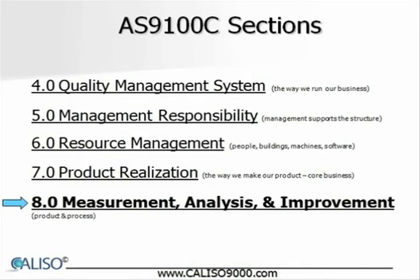Section 8 is titled Measurement, Analysis, and Improvement — of product and process. The most significant addition over ISO 9001 found in Section 8 of AS9100C is Section 8.2.4, Monitoring and Measurement of Product. This requires that when sampling inspection is used as a means to accept product, the sampling plan needs to be justified on the basis of recognized statistical principles and be appropriate for use.